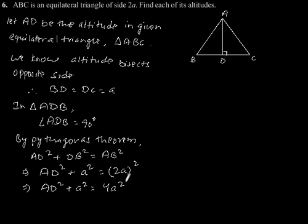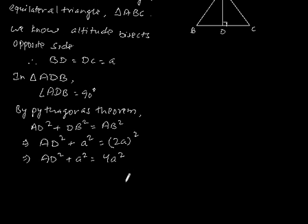Which implies AD squared plus a squared is equal to 4a squared, which implies AD squared is equal to 3a squared, which gives AD equals square root of 3a squared, which gives a root 3.